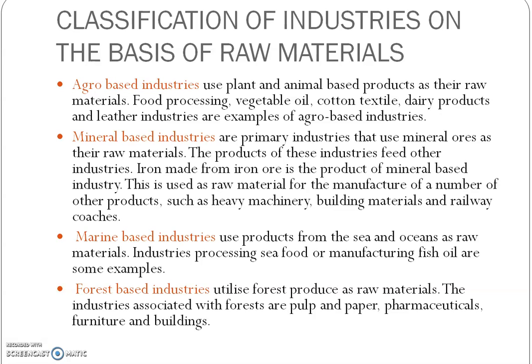Marine-based industries use products from seas and oceans as raw materials. For example, the seafood industry is an example of a marine-based industry. Forest-based industries are those industries which use forest produce as raw materials. For example, industries associated with forests include pulp and paper, pharmaceuticals, furniture, and buildings. Softwood in India is obtained from coniferous trees found in the Himalayan region. The plywood industries are also forest-based industries.